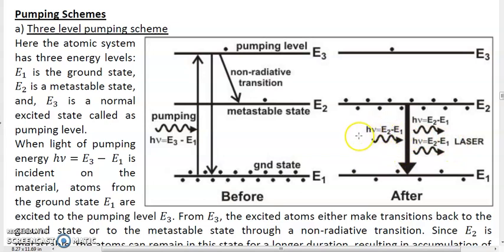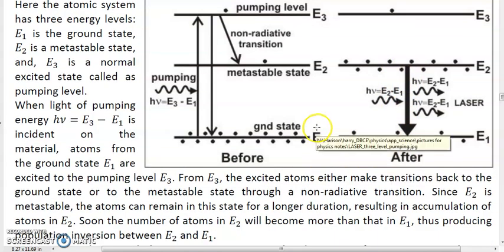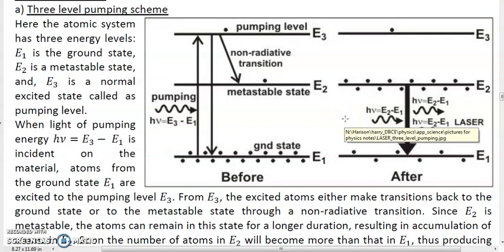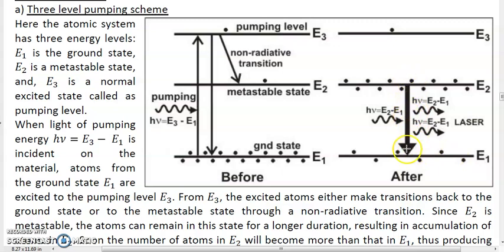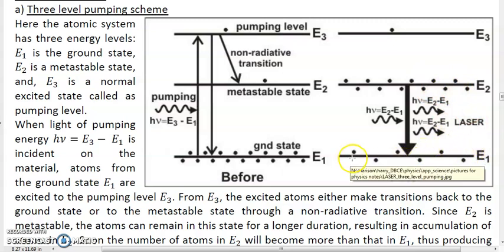The laser starts through this first spontaneously emitted photon from E2 to E1. However, the three-level pumping scheme has a disadvantage compared to the four-level scheme. To achieve population inversion, we need more atoms in E2 than in E1. E2 is the upper lasing level and E1 — the ground state — is the lower lasing level. Since the lower lasing level is the ground state, through pumping we need to take at least more than half the ground state atoms and put them into the metastable state E2.